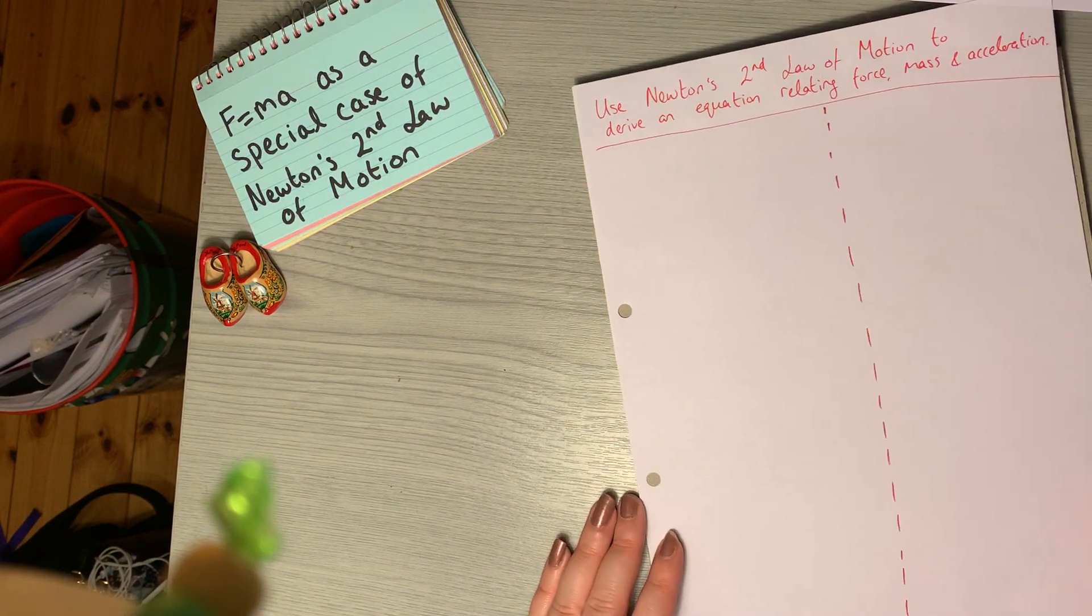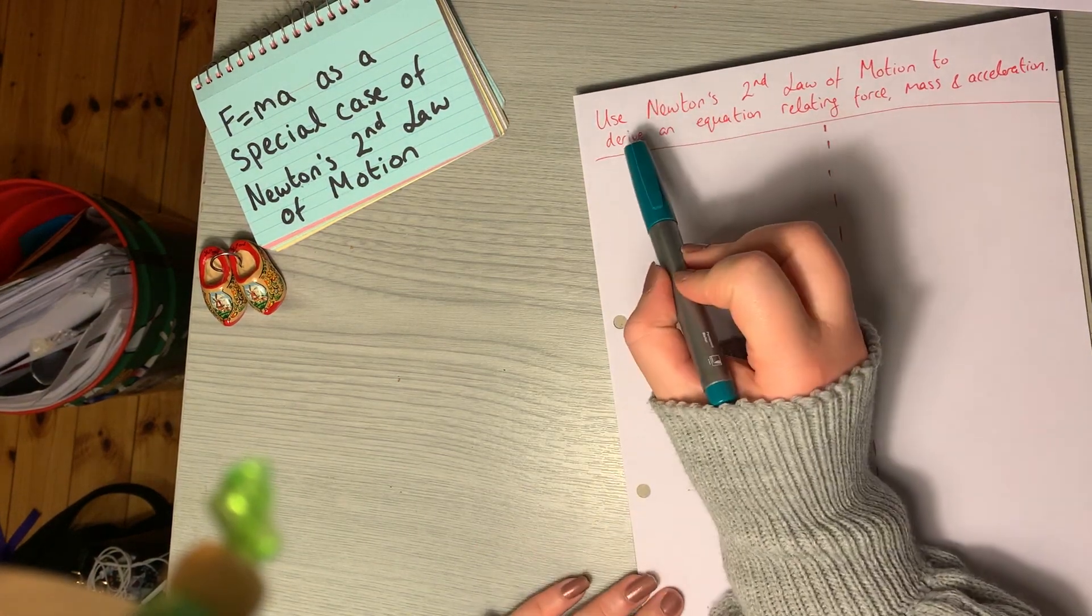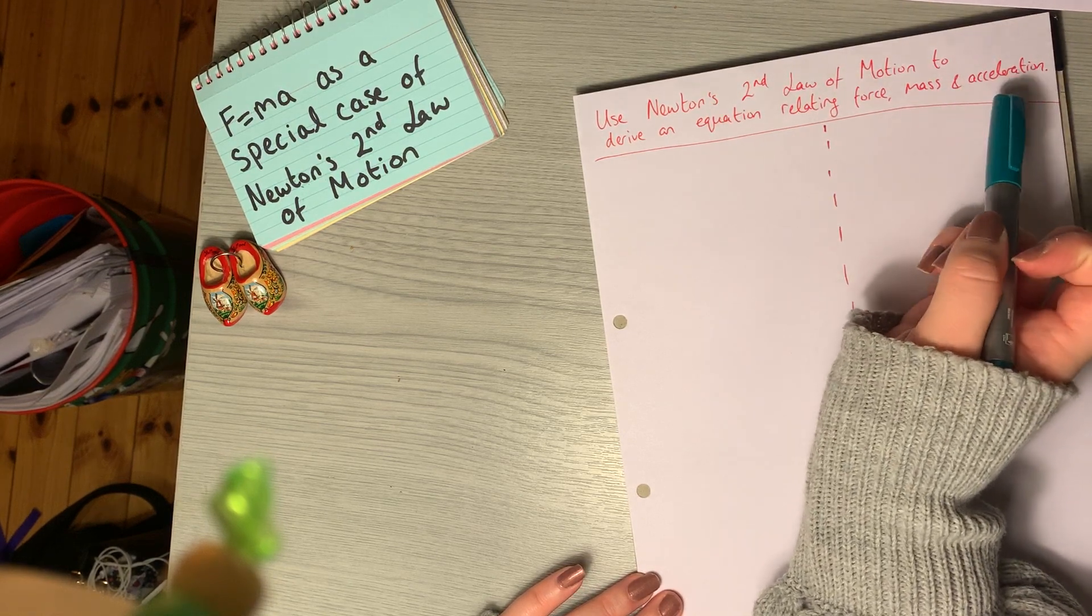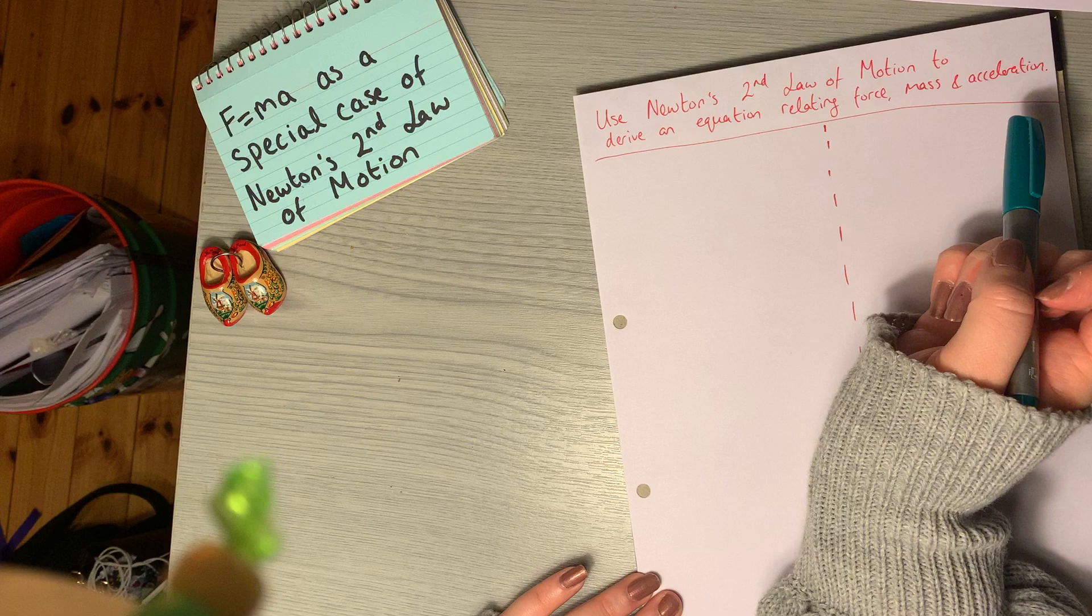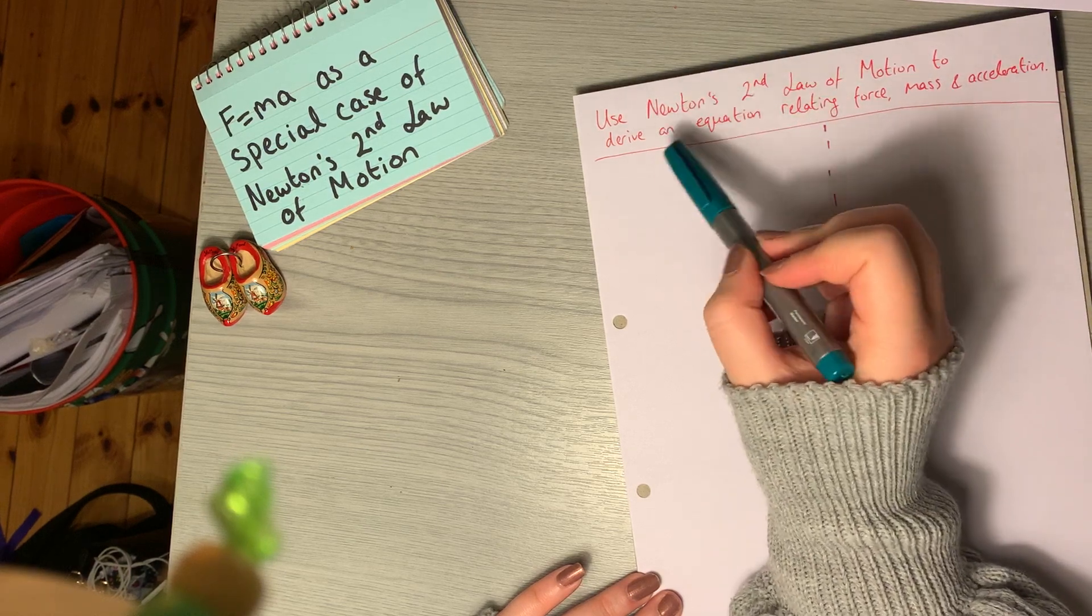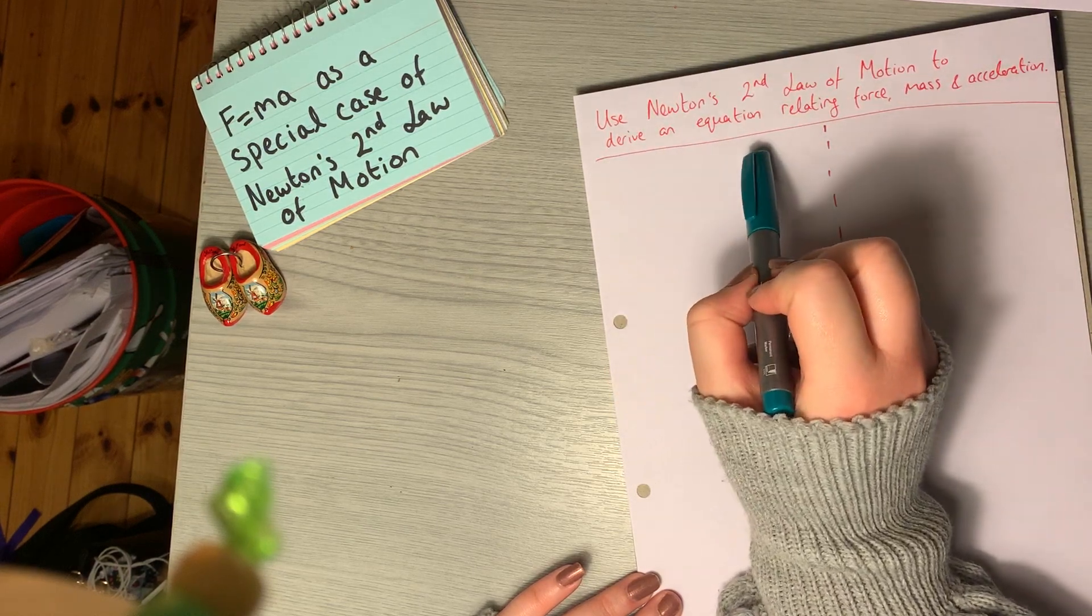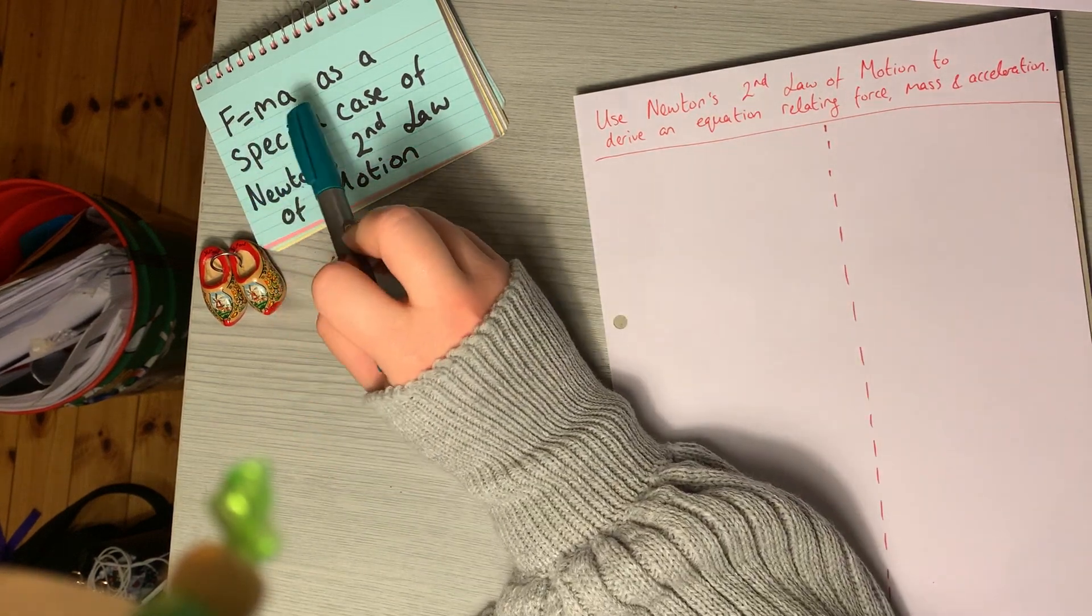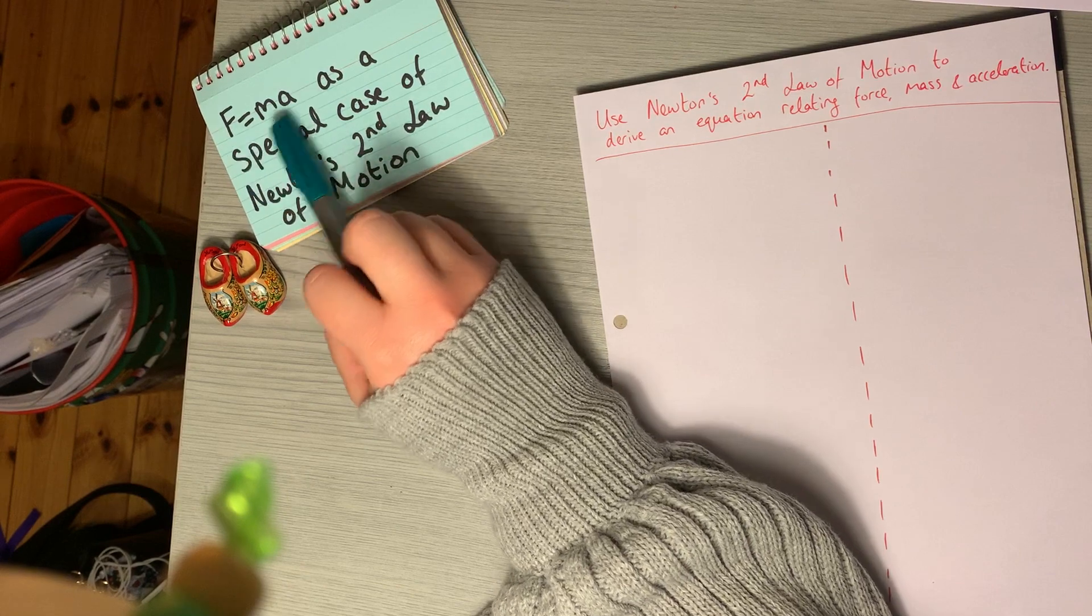A common question you might come across is to use Newton's second law of motion to derive an equation relating force, mass, and acceleration. So what this is asking you to do is to start with Newton's second law of motion and then work your way through a derivation to get F equals Ma. This is the equation we're looking for.